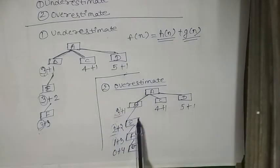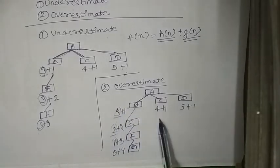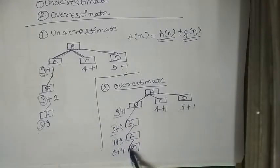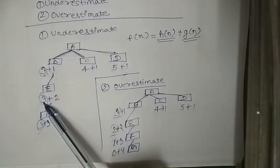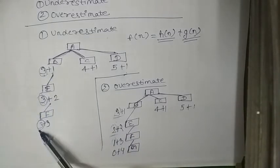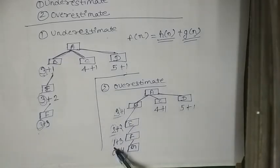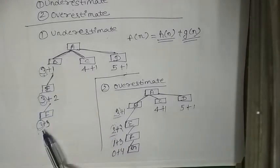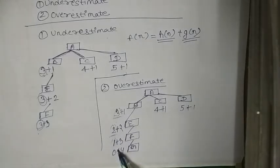You just have to explain these two things. You can draw some states for these also. So just remember: in underestimate, there is no deflection in heuristic values. And in overestimate, there is deflection in heuristic values and they keep on decreasing by the same order. So just explain this.